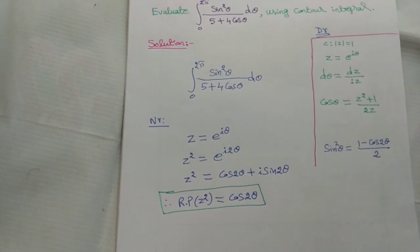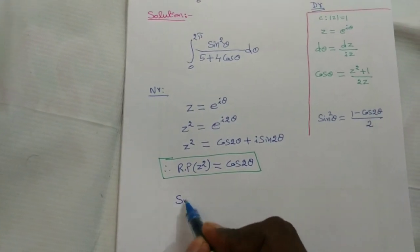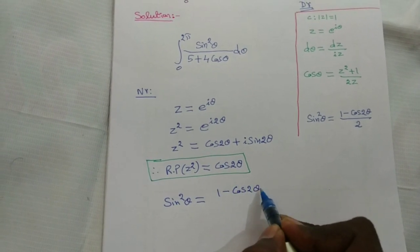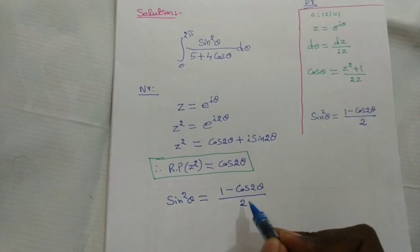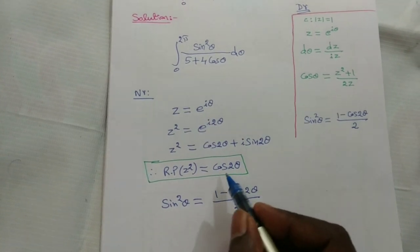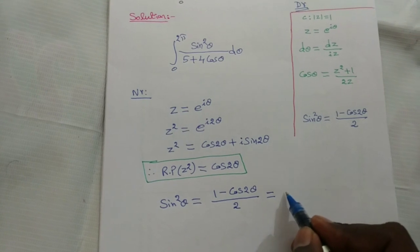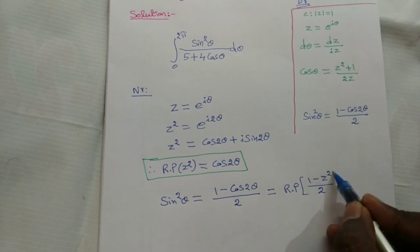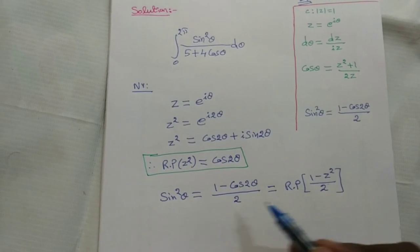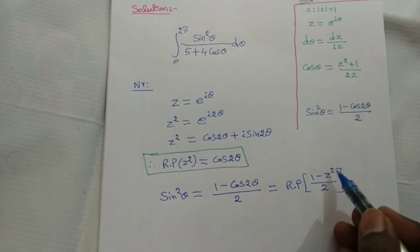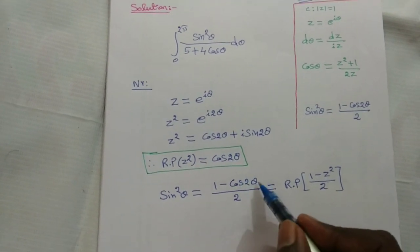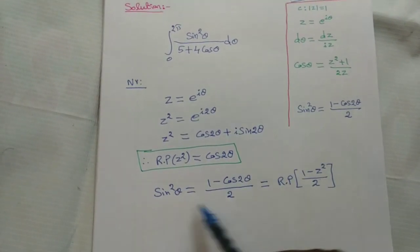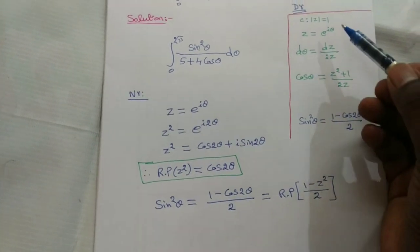Since sin²θ = (1 − cos2θ)/2 and cos2θ is the real part of z², it follows that sin²θ equals the real part of (1 − z²)/2. So for the sin²θ in the numerator, I am going to substitute the real part of (1 − z²)/2, while for the denominator I substitute cos θ = (z² + 1)/(2z).